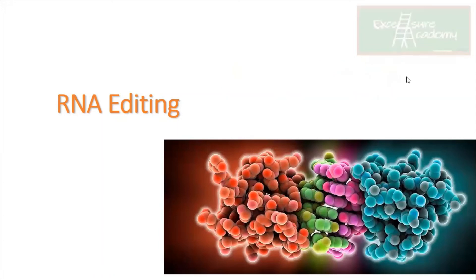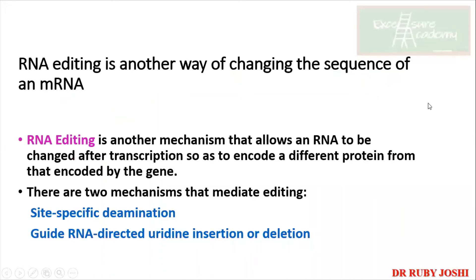RNA editing is another way of changing the mRNA sequence — it allows RNA to encode different proteins than those directly encoded by the gene. There are two methods: site-specific deamination, and guide RNA-directed uridine insertion or deletion. In site-specific deamination, C is converted to U to create a stop codon; in guide RNA editing, U (uridine) groups are either inserted or deleted.